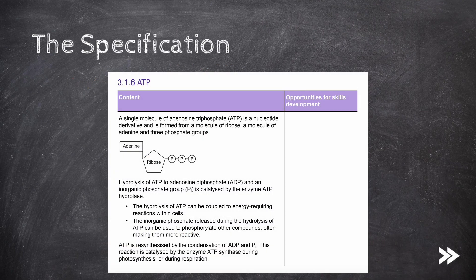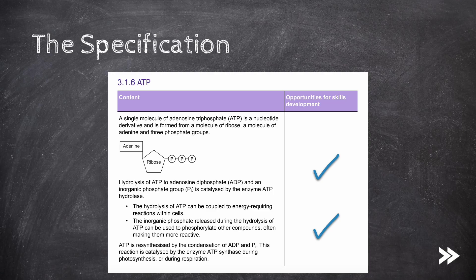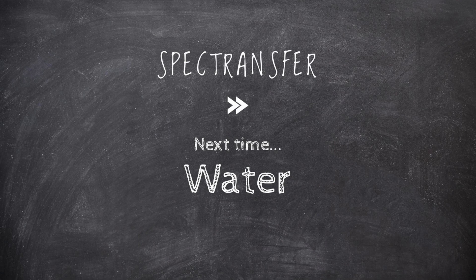That would be ATP covered. I have given an overview of ATP as well as its structure. We have covered ATP hydrolysis and how it may be coupled to energy-requiring reactions within cells, as well as how the inorganic phosphate ion released during ATP hydrolysis can be used to phosphorylate other compounds to make them more reactive. We have also covered how ATP may be re-synthesized by the condensation of ADP and Pi. That would be it for now — thanks for watching. Next time we will be covering water.